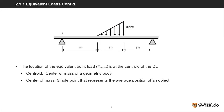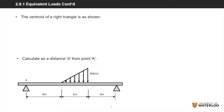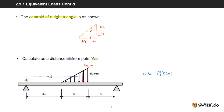To find the location of the point force, we again determine the centroid of the original DL. Unlike a rectangle where the centroid is in the middle, the centroid of a right triangle is distributed by thirds. To calculate distance D from point A, we add the 8 meters from point A to the left end of the DL, plus two-thirds multiplied by the total length of 6 meters. This gives a final answer of 12 meters.